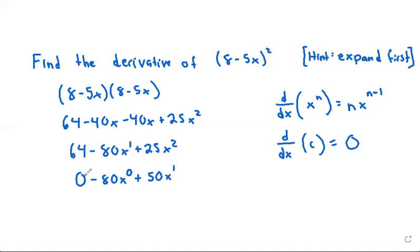We don't have to write the 1, so we can just leave that off. Also, x^0 is the same as 1, so this would be -80 times 1. So let's write that as -80, then plus we don't have to write an exponent of 1, so this is just +50x.